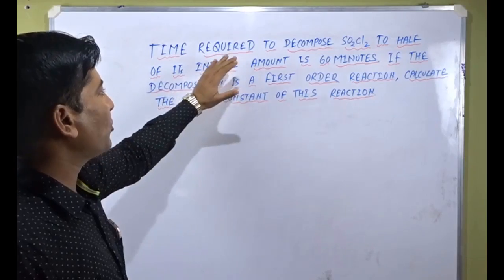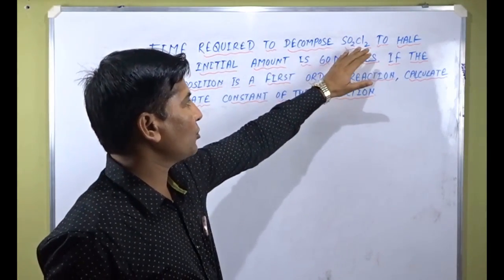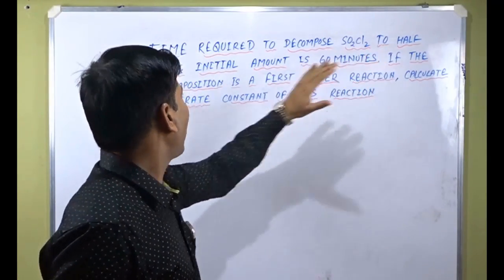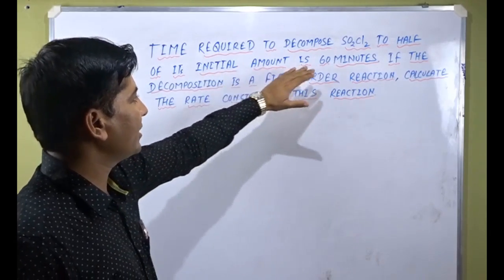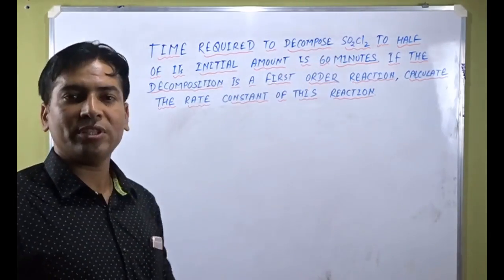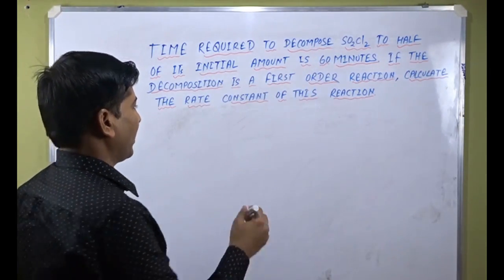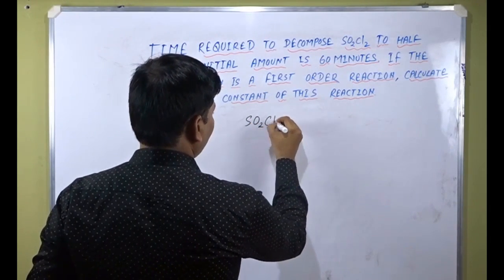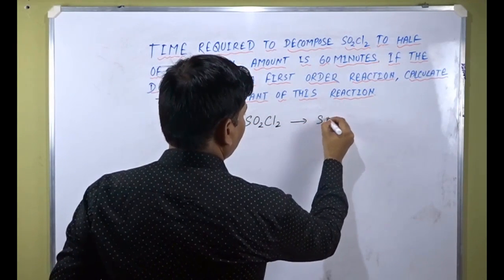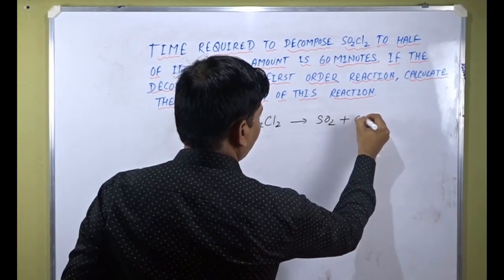The problem says that time required to decompose SO2Cl2 to half of its initial amount is 60 minutes. One decomposition reaction is taking place and the reactant is SO2Cl2. It is decomposing into SO2 and Cl2.